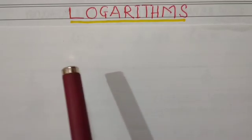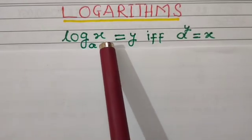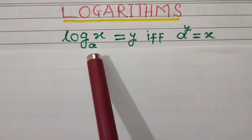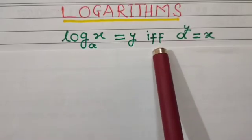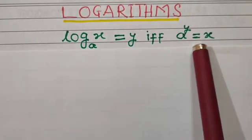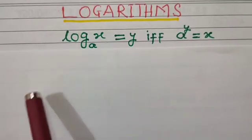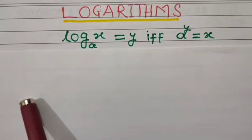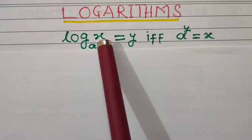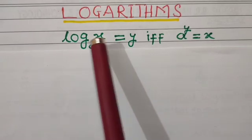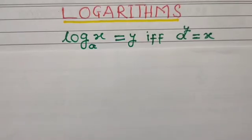Now we learn about logarithms. The logarithm of x to the base a is equal to y if and only if a to the power y is equal to x. This is the mathematical definition of logarithm. Here a is the base of the log, x is known as the argument of the log, and the value of this log is y.